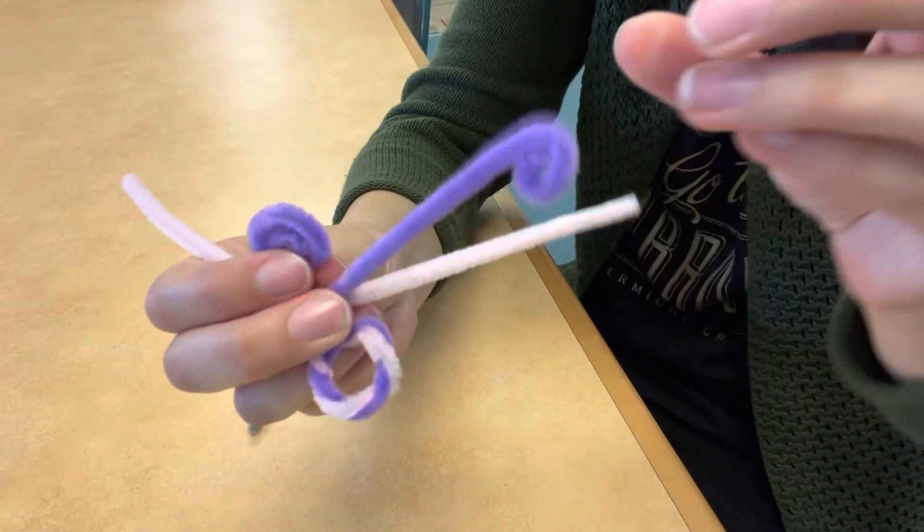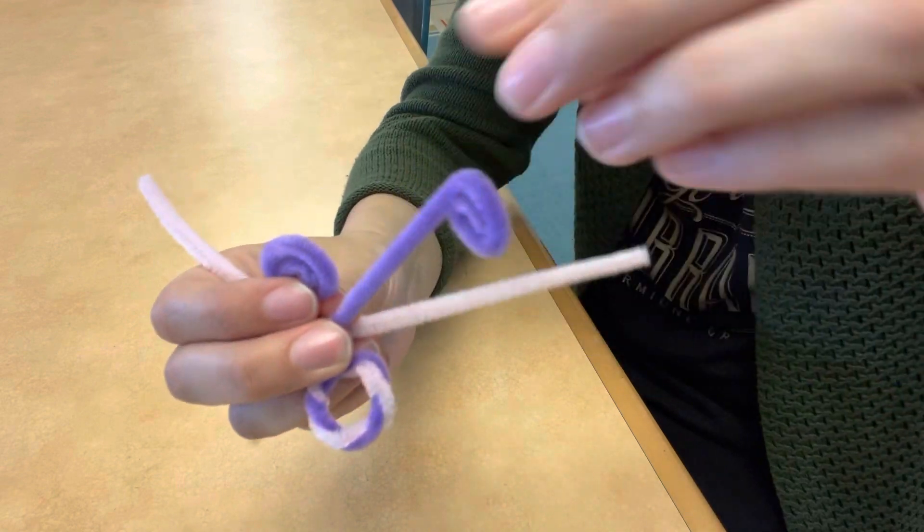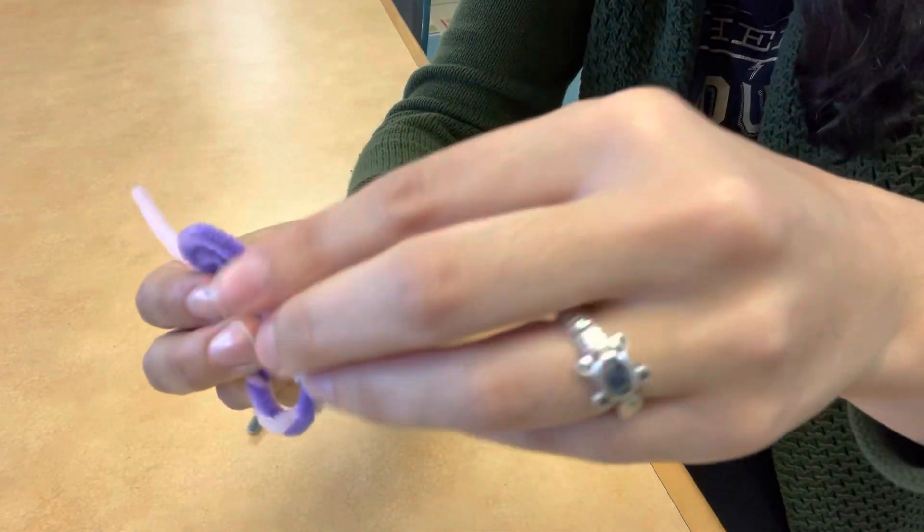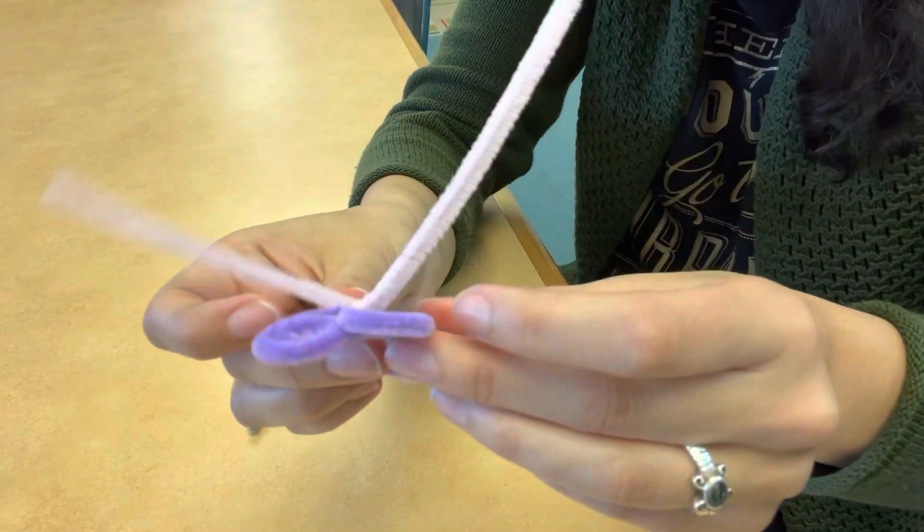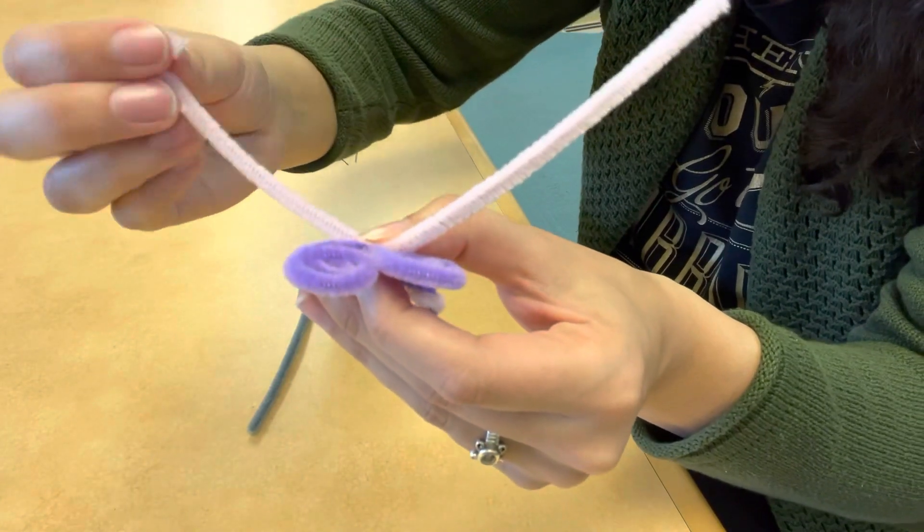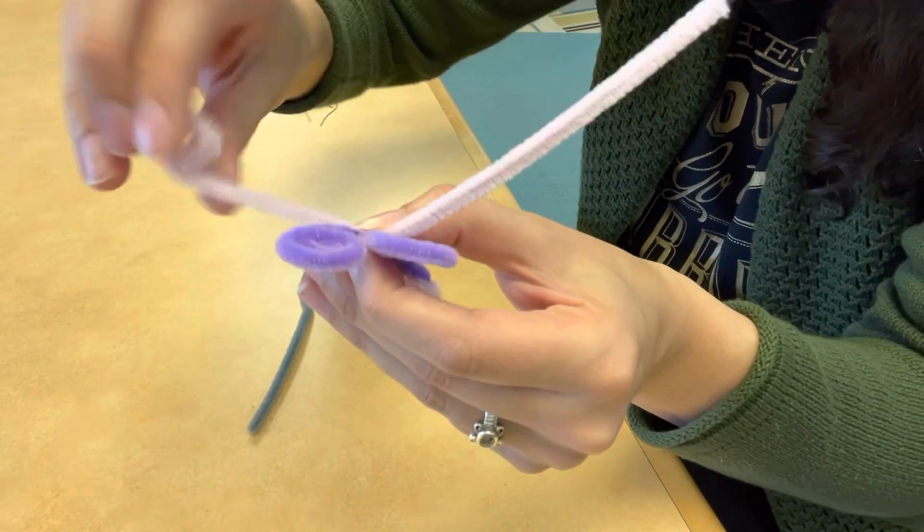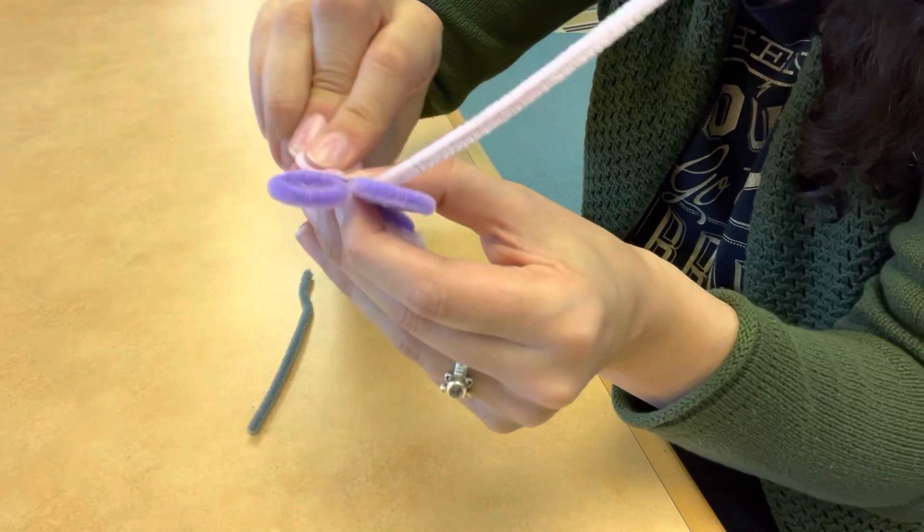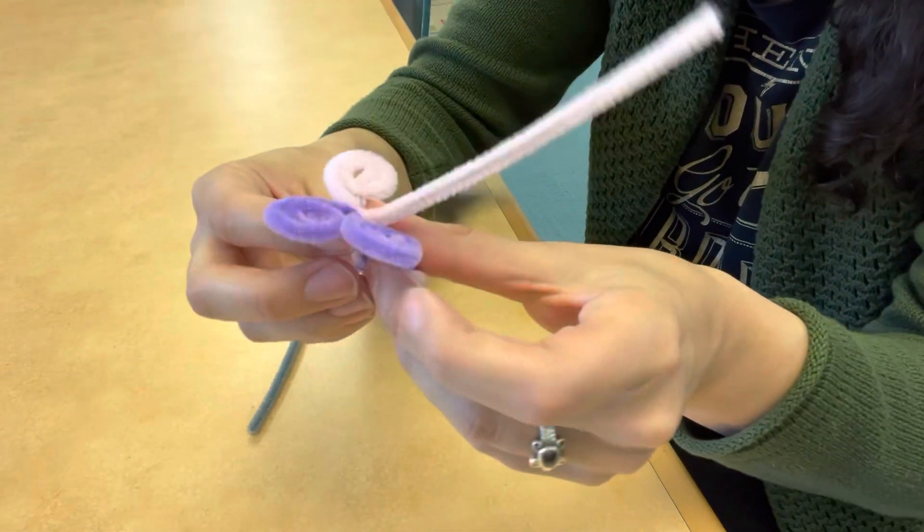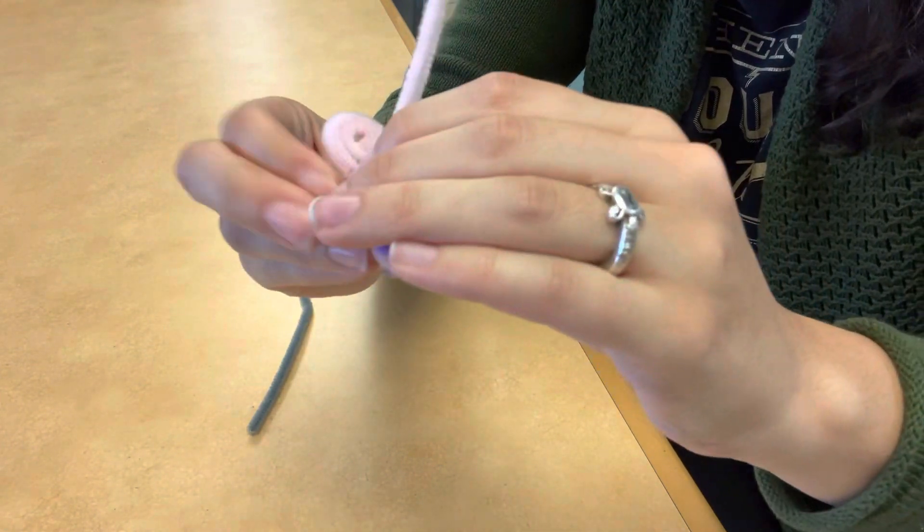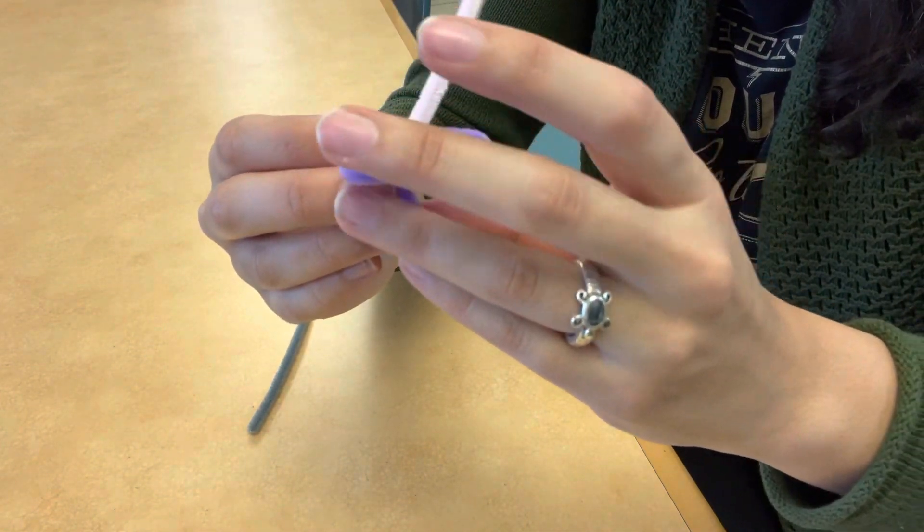Does anyone know what mariposa means? Well, if you just so happen to speak Spanish, you'll know that mariposa means butterfly. This craft was inspired by Encanto, where they have the butterfly symbols throughout the movie. Butterflies are usually a symbol for rebirth, transformation, and hope.